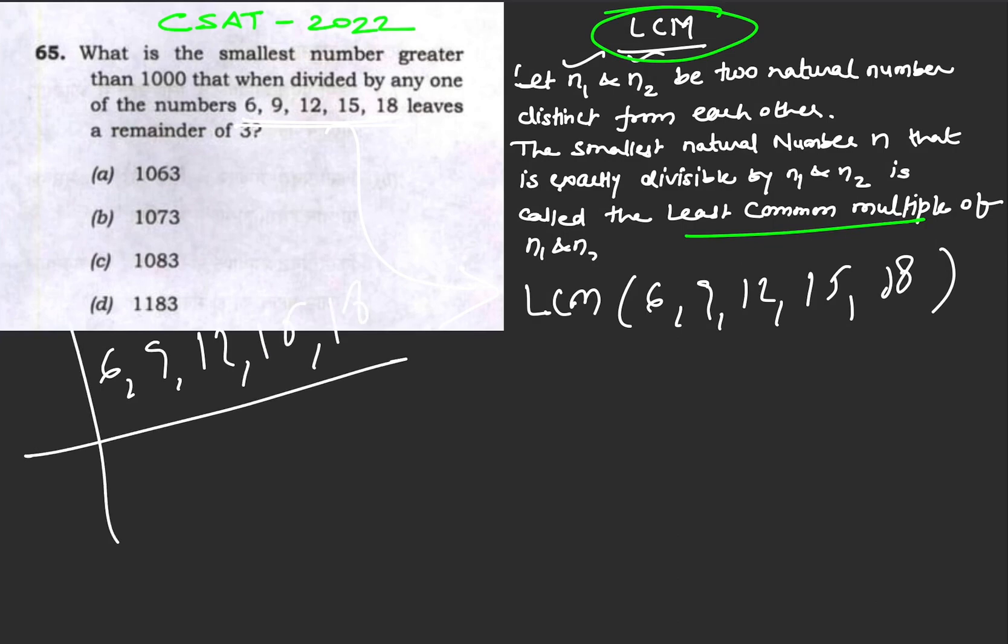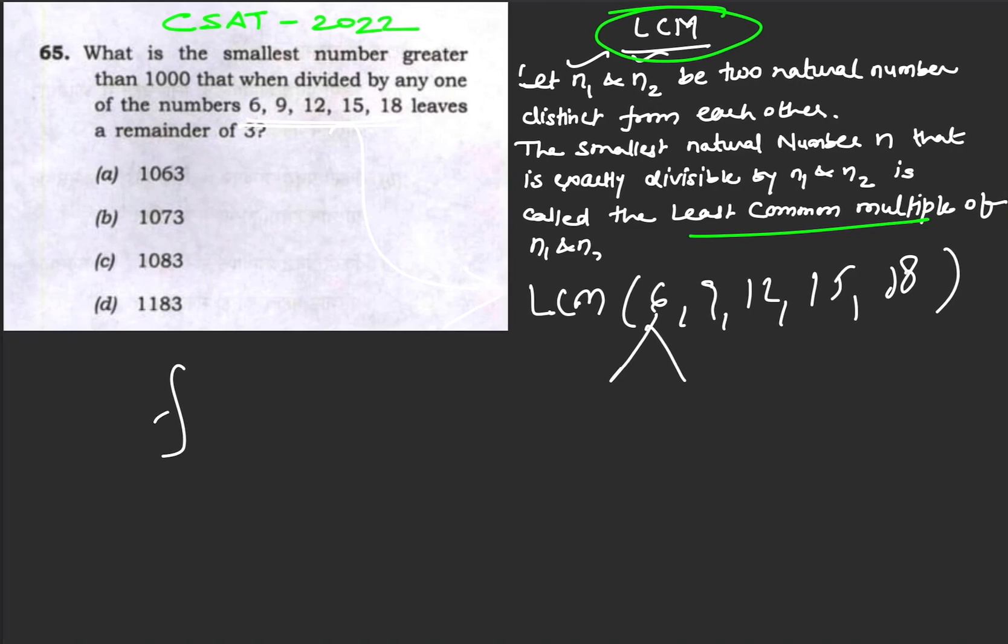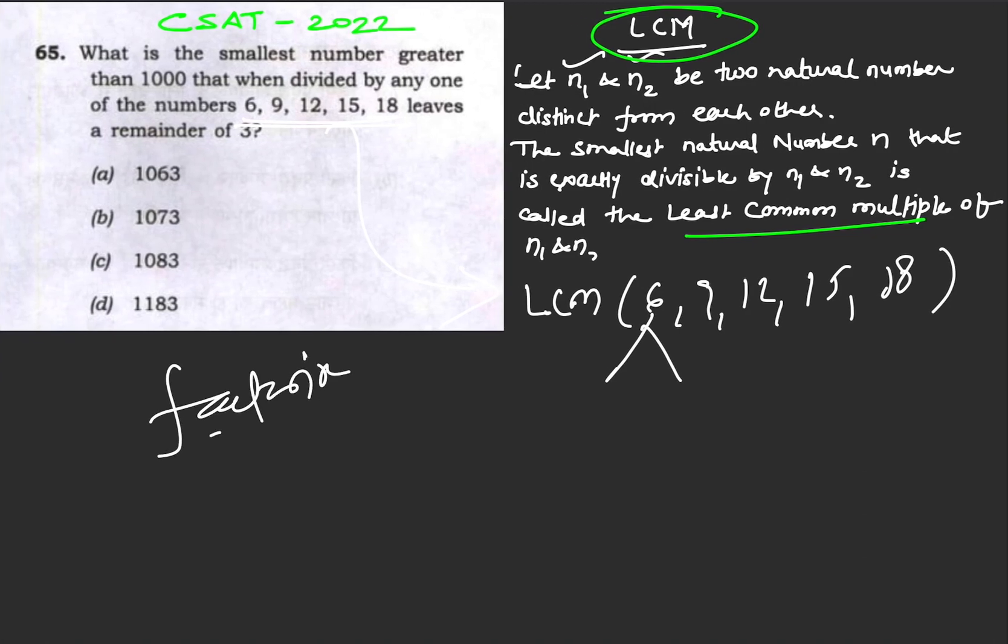What you have to do is factorize it. So this is 2×3, 3×3, 4×3, 5×3, and 6×3. Then you have to factorize it further.